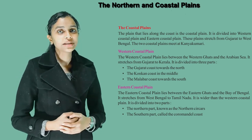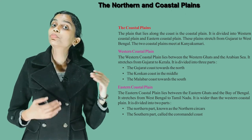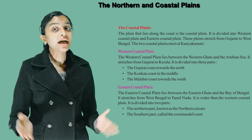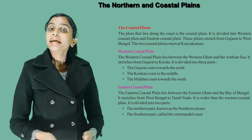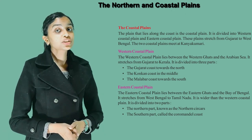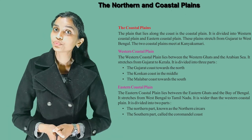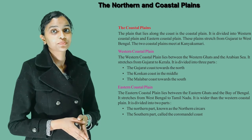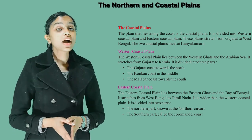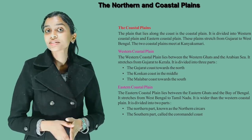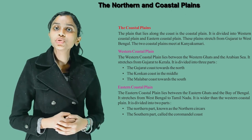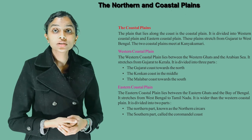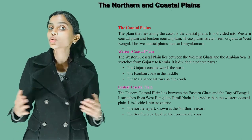The eastern coastal plain lies between the Eastern Ghats and the Bay of Bengal. It stretches from West Bengal to Tamil Nadu and is wider than the western coastal plain. It is divided into two parts: the northern part known as the Northern Circars, and the southern part called the Coromandel coast.